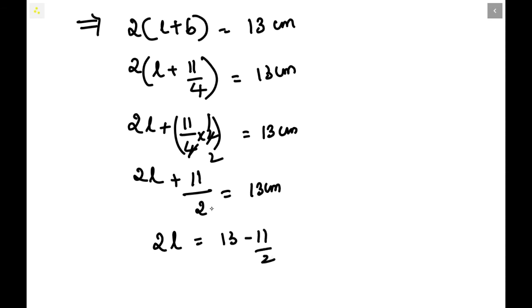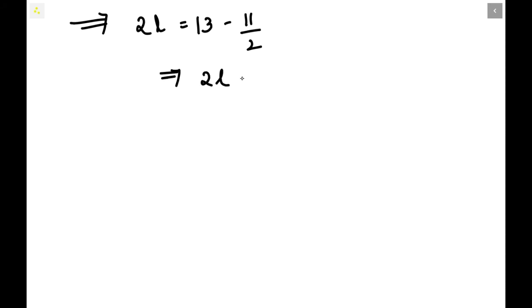Let us solve it. 2L equals 13 minus 11/2. Now we can simplify it: 2L will equal 26 minus 11, all over 2.